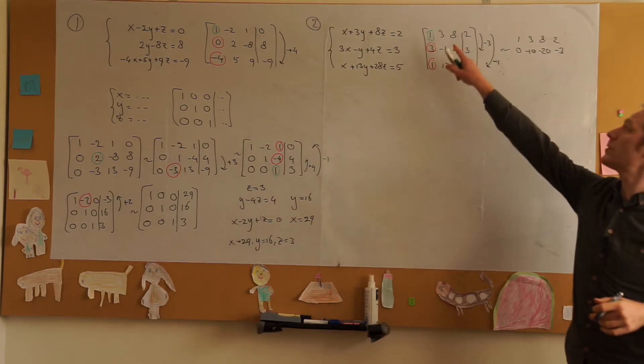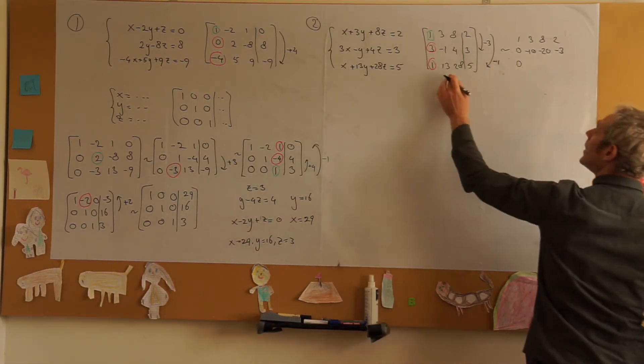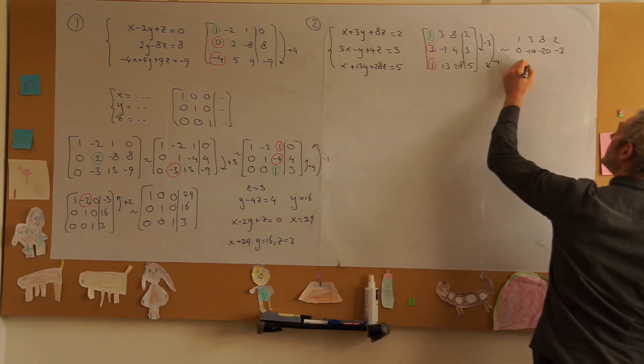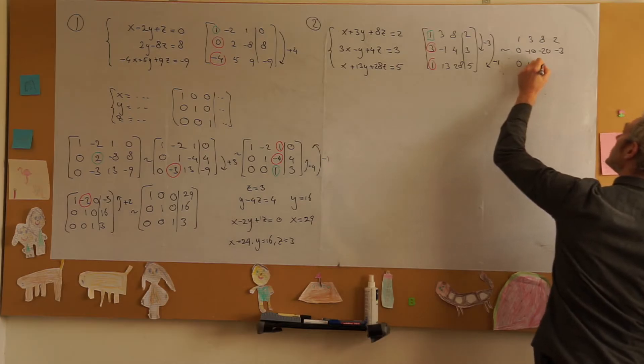Then we subtract the first row from the third and we get 1 minus 1 is equal to 0, 13 minus 3 is equal to 10, 28 minus 8 is equal to 20 and 5 minus 2 is equal to 3.